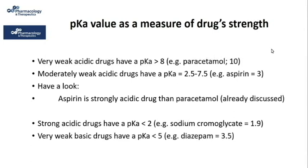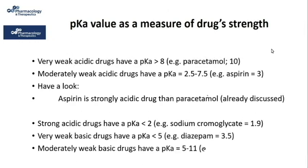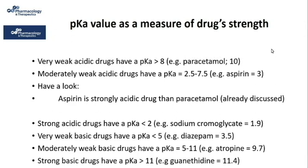Very weakly basic drugs have a pKa less than 5 — for example, diazepam with pKa = 3.5. Moderately weakly basic drugs have a pKa ranging from 5 to 11 — for example, atropine with pKa = 9.7. Strong basic drugs have a pKa greater than 11 — for example, guanethidine with a very high pKa of 11.4.